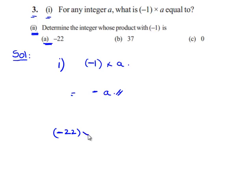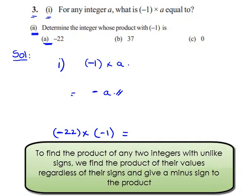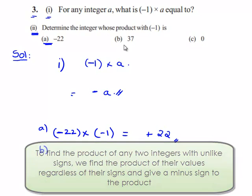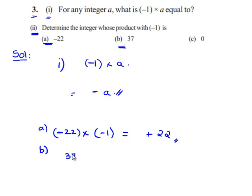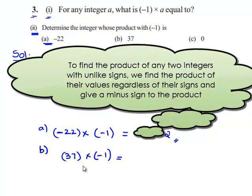We'll take the second bit. The first problem: negative 22 multiplied with negative 1. First we multiply their values regardless of the signs, that is 22 into 1 gives 22. When we multiply two integers of similar signs we always get a positive sign. Therefore, negative 22 into negative 1 gives positive 22.